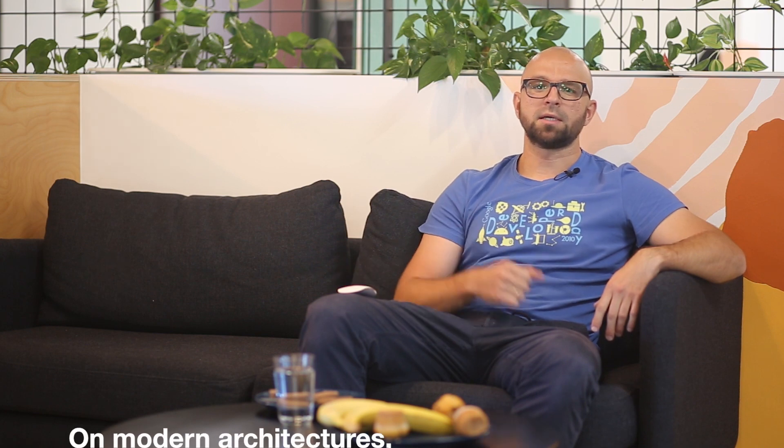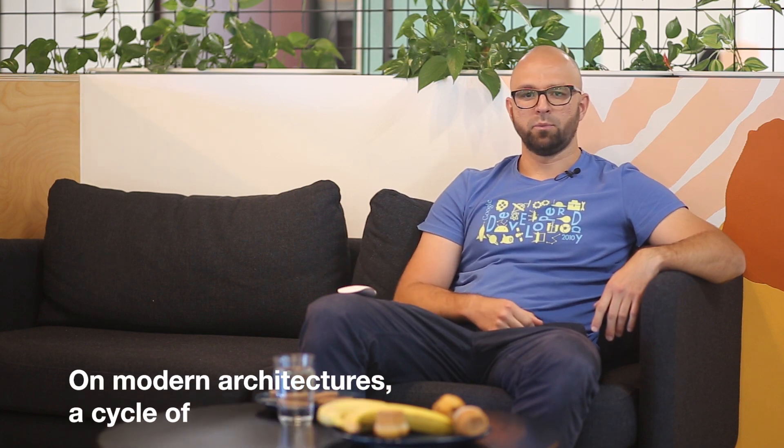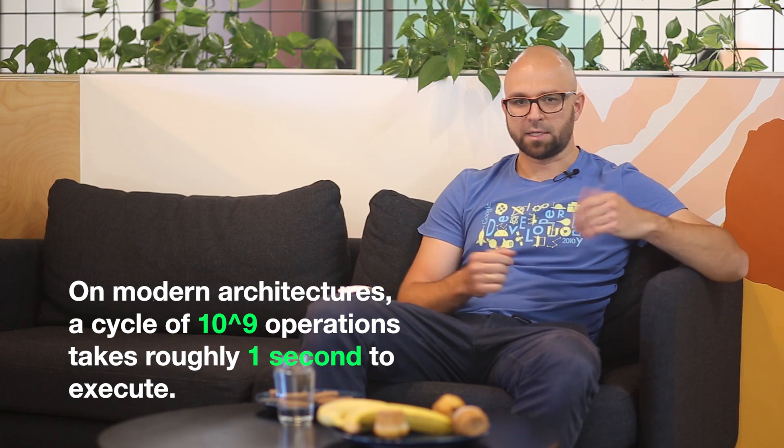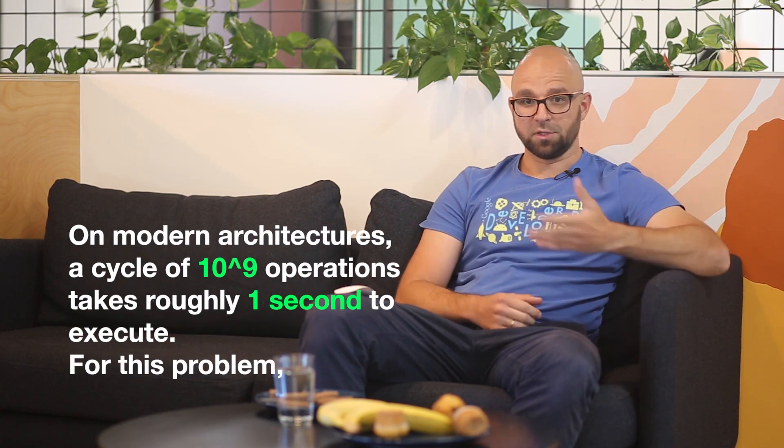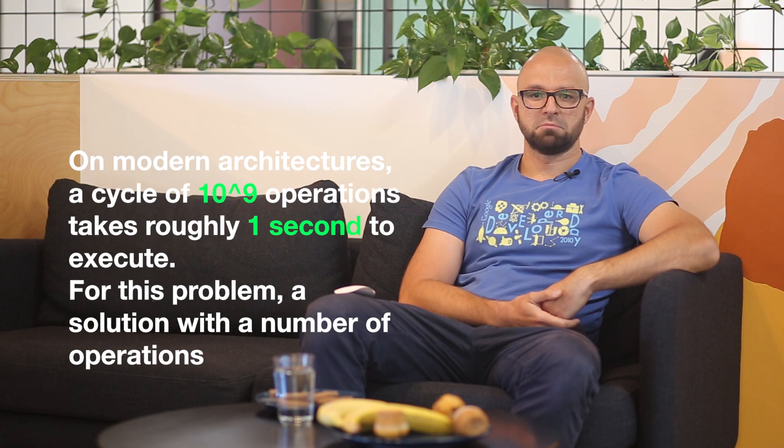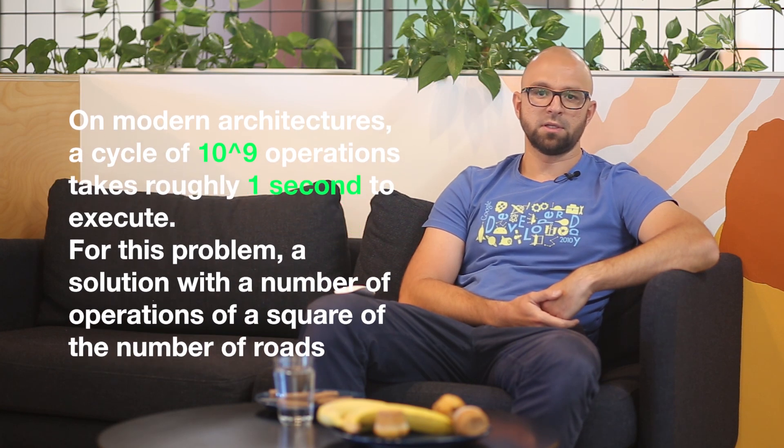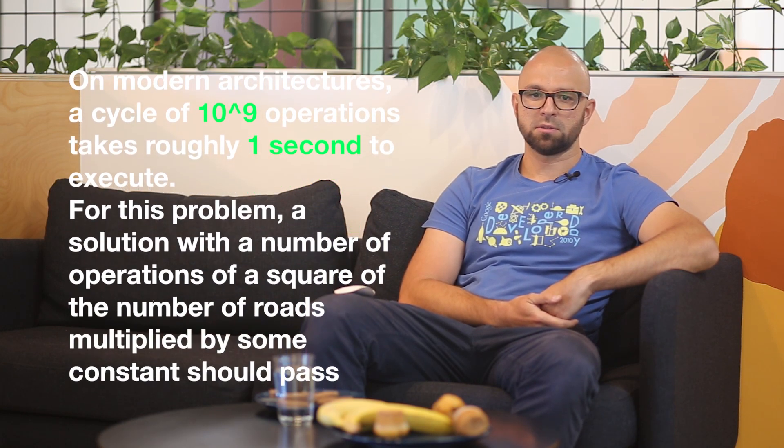As you can see, the choice of cities 1 and 2 is the optimal one and the network rank in that case is 5. Now let's check the problem constraints. The number of cities is 100, which means the maximum possible number of roads is no more than ten thousand. Let's take a pause and think why. On modern architectures, a cycle of 1 billion operations takes roughly one second of time to execute. For this problem, a solution with a number of operations of a square of the number of roads multiplied by some constant should pass.